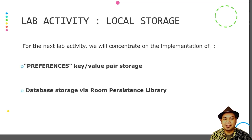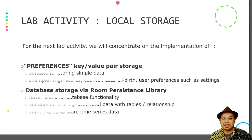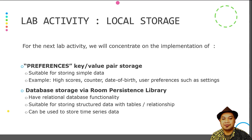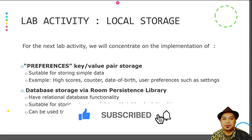For the next lab activity on local storage, we will concentrate on the implementation of Shared Preferences — that is, key-value pair storage — and database storage via the Room Persistence Library, as suggested by the Android documentation. Shared Preferences is usually suitable for storing simple data such as high score, counter, date of birth, or user preferences such as settings, UI brightness, and UI type. For database storage via the Room Persistence Library, Android stores the data in the SQLite database. The advantage of Room is that it provides a high-level API for the user to easily store data inside the SQLite database.